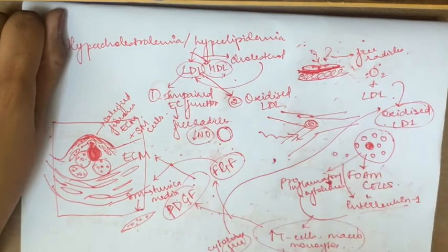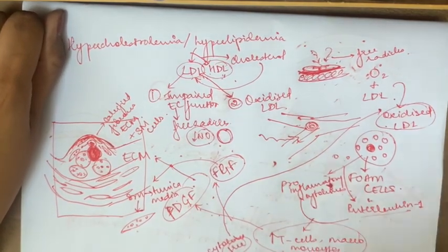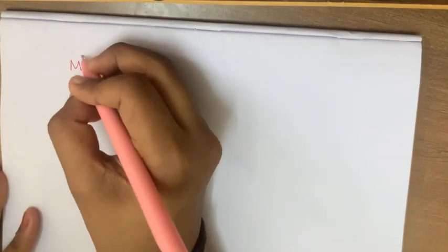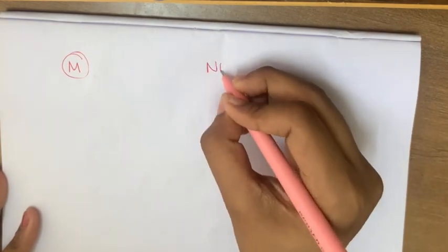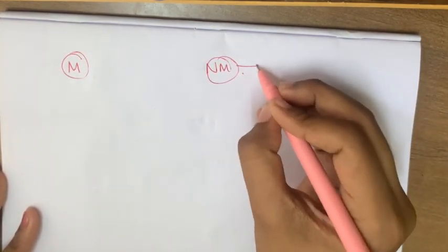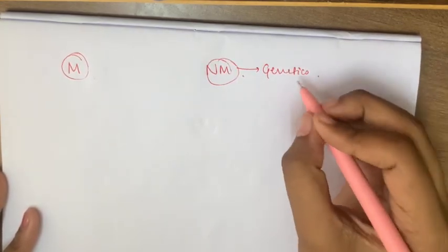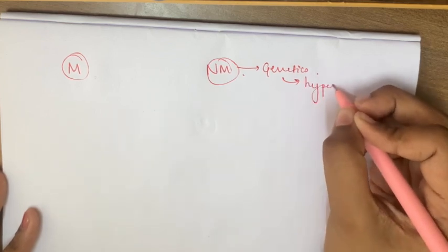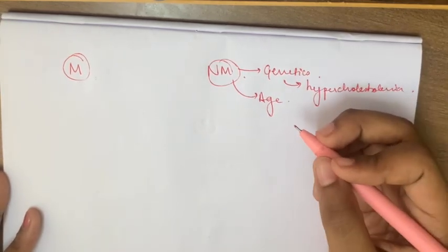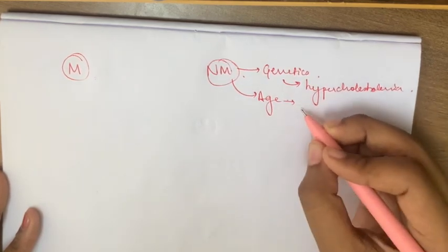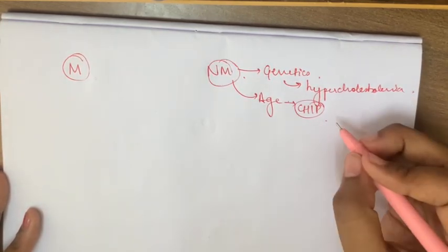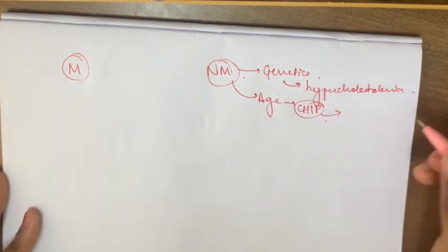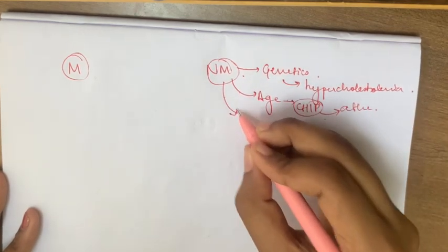Now that we know about all of this, let's see the risk factors for atherosclerosis and how this can cause heart attack. So there are two kinds of risk factors: modifiable and non-modifiable. So non-modifiable you have genetics. Genetics includes a genetic predisposition for hyperlipidemia or hypercholesterolemia. Age. As age increases you have a lot of factors like chip which are expressed in our cells which make it easy for cells to proliferate or inflammatory process to happen which leads to atherosclerosis.